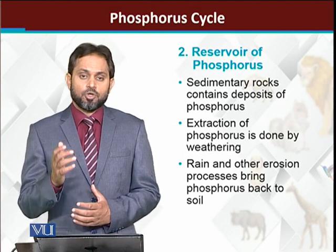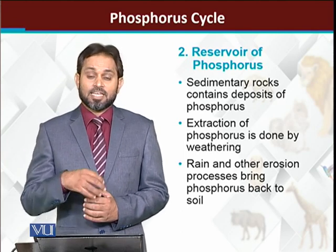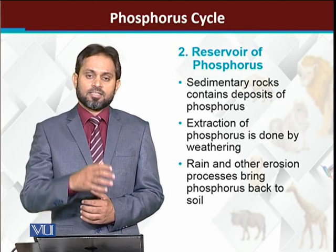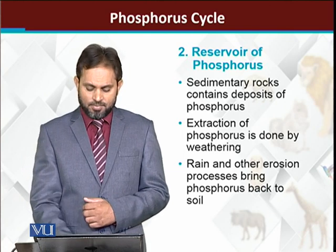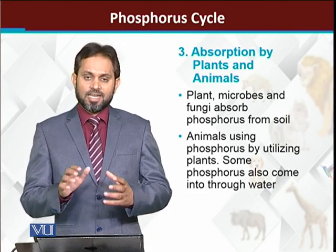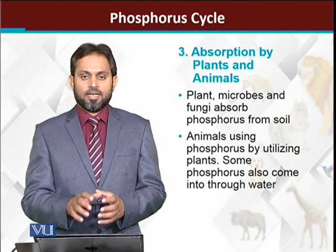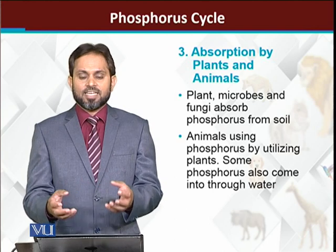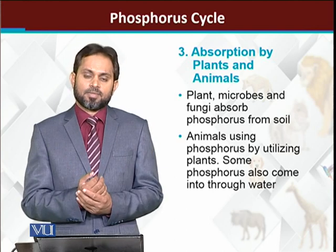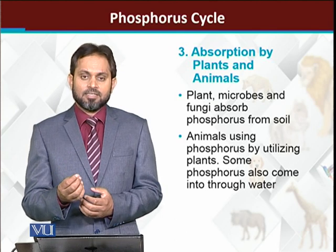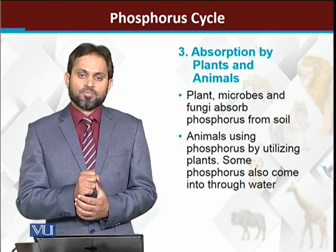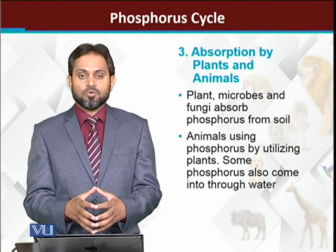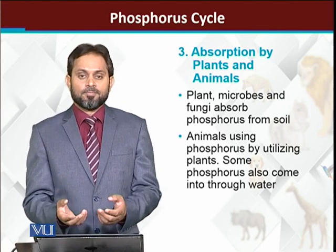Phosphorus is a limiting element in the soil environment. When phosphorus comes out from its reservoir into the soil, as a phosphate it is absorbed by plants, algae, and fungi. They absorb the phosphates and make them part of their body.